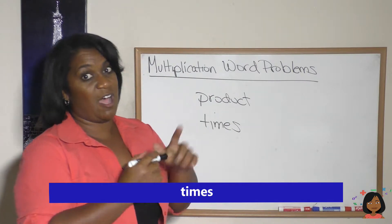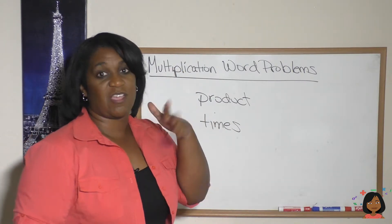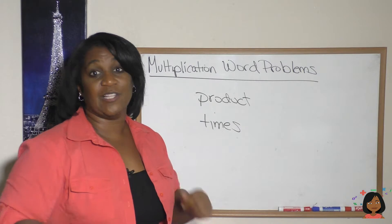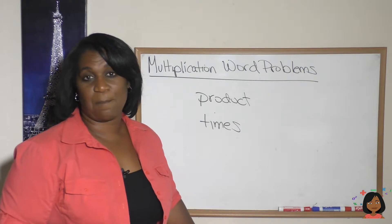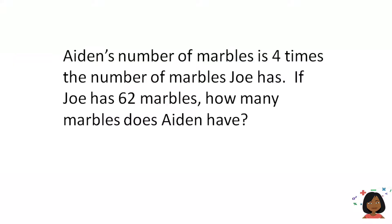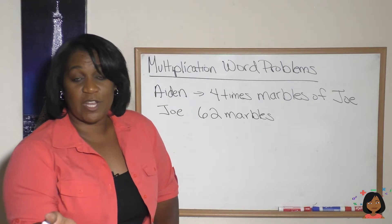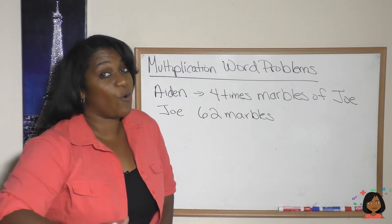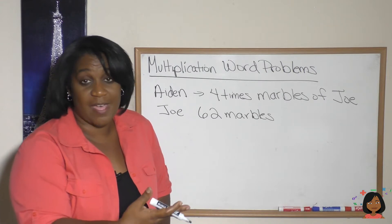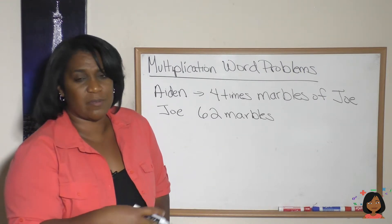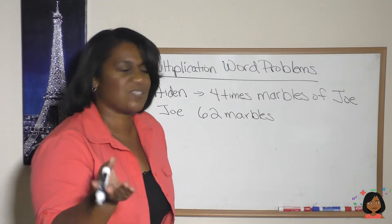When you say something times another thing, you should think multiplication. Let's take a look at this first example. Aiden's number of marbles is four times the number of marbles Joe has. If Joe has 62 marbles, how many marbles does Aiden have? We know that Aiden has four times the number of marbles that Joe has, and Joe has 62 marbles. Let's set up an equation for this.